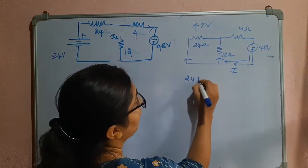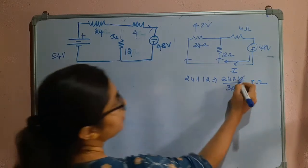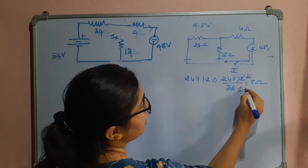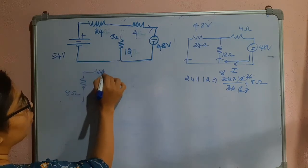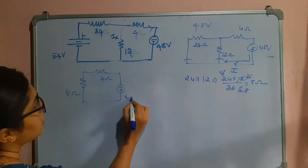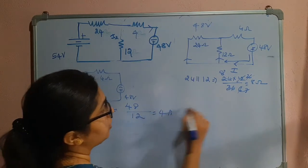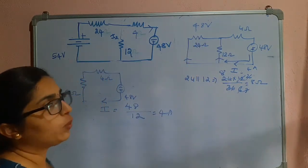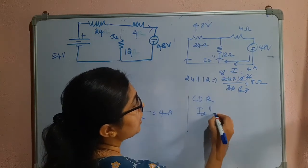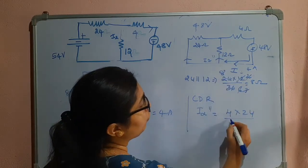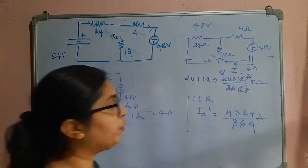We cannot ignore the 24 ohm resistor. First find the parallel combination of 24 ohm and 12 ohm: 24×12/36 = 8 ohms. The simplified circuit is 8 ohm and 4 ohm in series with 48V, giving total resistance 12 ohms. So I = 48/12 = 4 amperes. This 4 amperes is divided between the 12 ohm and 24 ohm resistors. Using the current divider rule: I2'' = 4 × 24 / (24+12) = 96/36 = 24/9 amperes.